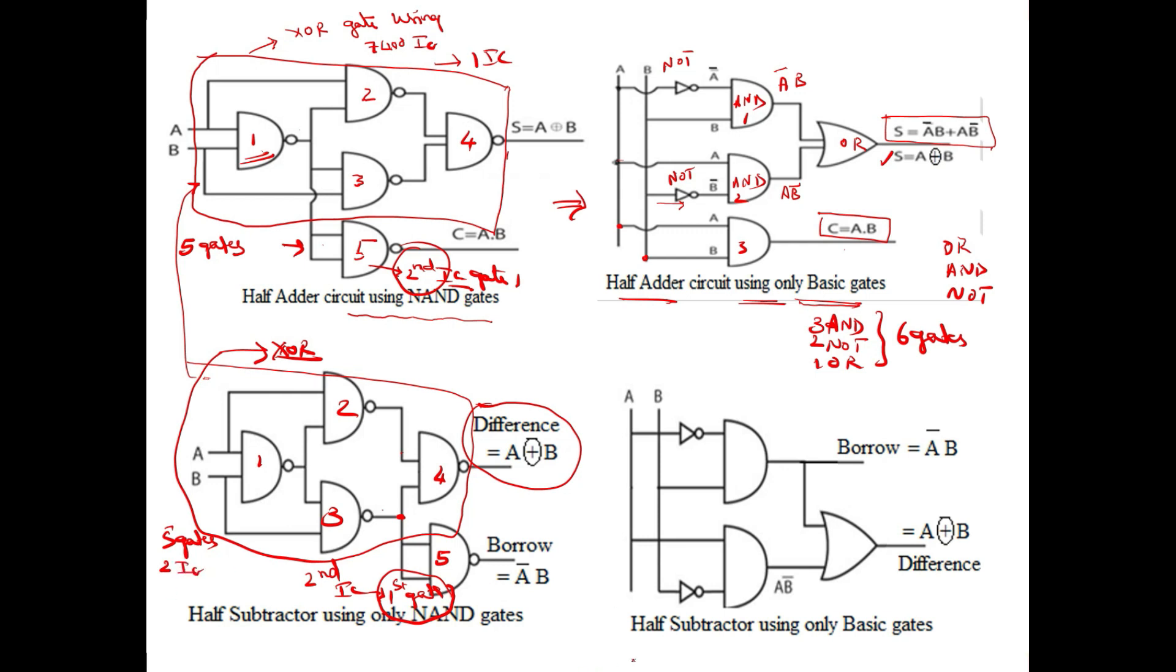Coming to the half subtractor using basic gates. Already I have explained here for sum. And I told you sum and difference both are the same. So I need 2 AND gates, 2 NOT gates, and 1 OR gate. Borrow for subtractor is A bar B, which is already available here A bar B. So I need not have to take any other gate, I can directly take this as borrow. So how many gates do I require here? 2 AND gates, 2 NOT gates, 1 OR gate. Totally 5 gates I require to construct. 5 basic gates I require to construct half subtractor using basic gates.